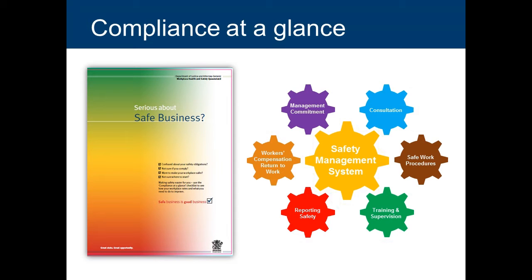There are a number of essential elements that make up a work health and safety management system, described in one of our resources called the Serious About Safe Business Pack. It's available on our website. In this webinar we're going to run through each of these essential elements. They include management commitment, consultation, managing hazards and safe work procedures, training and supervision, reporting safety, and workers' compensation and return to work.